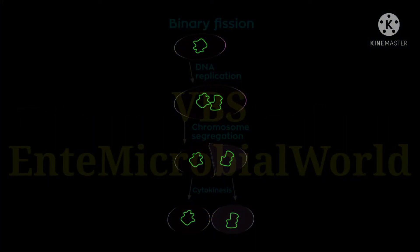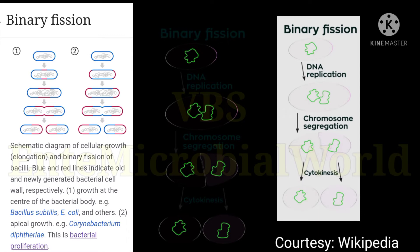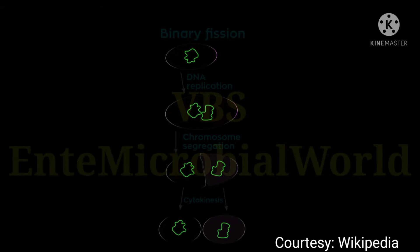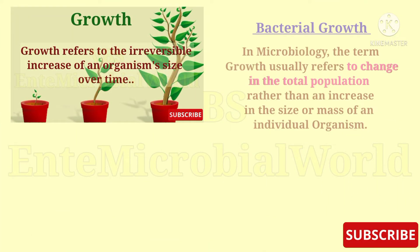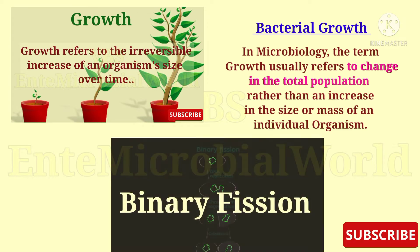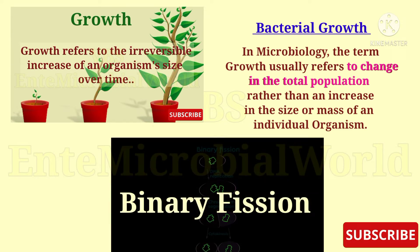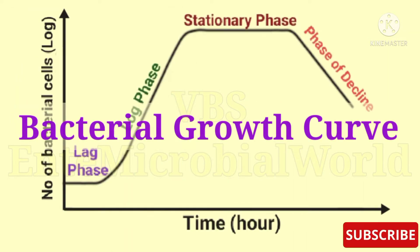Binary fission means one cell divides producing two cells, and it goes on. So the increase in bacterial population is by geometric progression. Up to this we learnt what is growth, what is bacterial growth, and the most common means of bacterial reproduction. Next we are going to see about the bacterial growth curve.